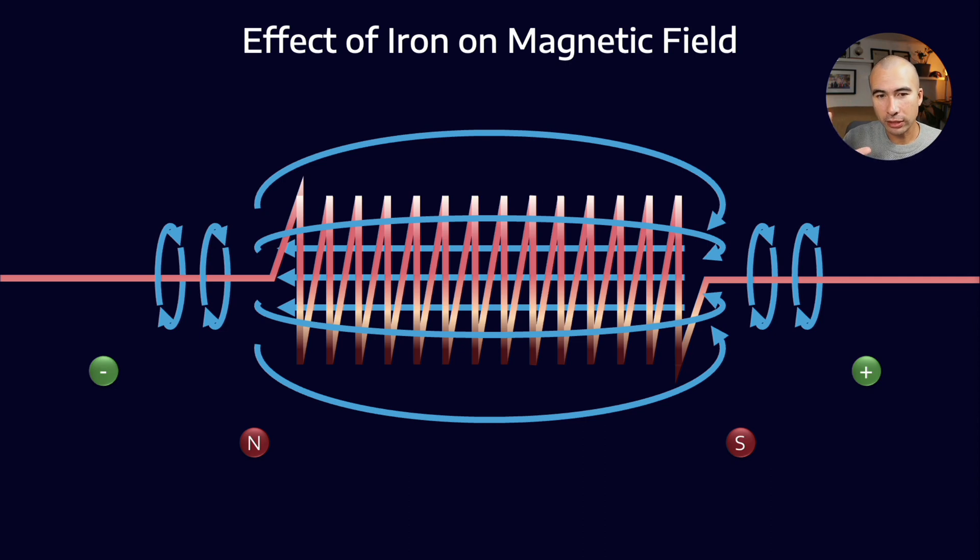The strength of this magnetic field is dependent on a couple of things: the current, the number of windings, and also the core. Here what I'm showing is a coil with an air core. The magnetic field lines pass from north to south, and then they go back through the air core from south to north.